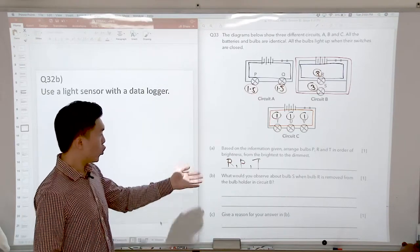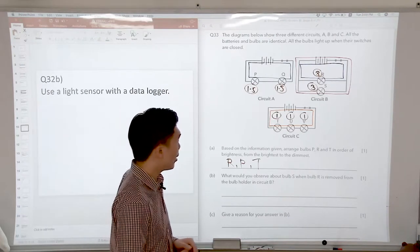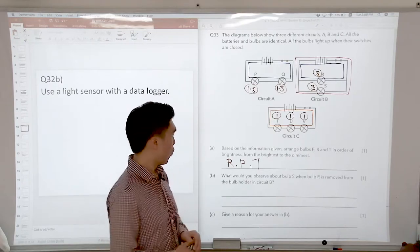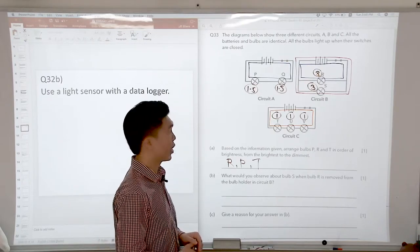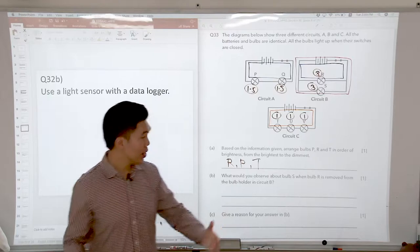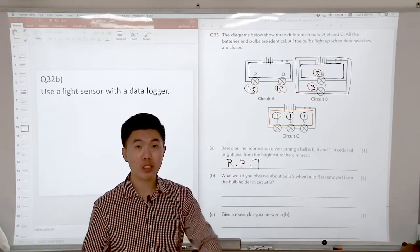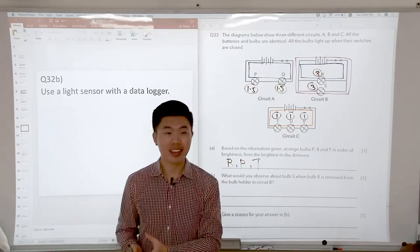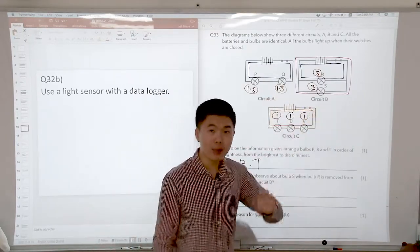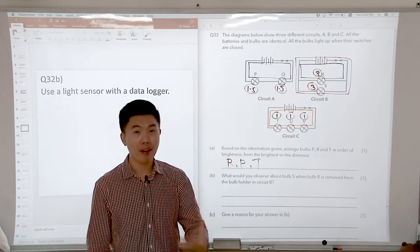So now let's go on to part B. What would you observe about bulb S when R is removed from the bulb holder in circuit B? So this is what they usually like to ask you, advantages and disadvantages of series and parallel circuits.